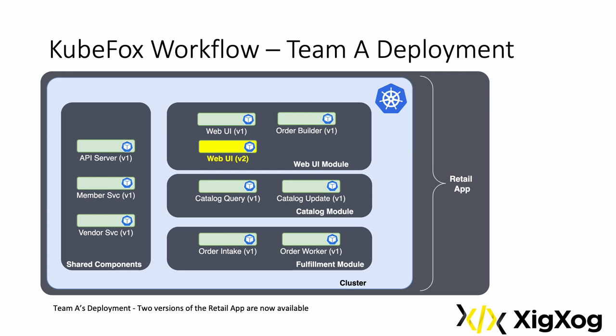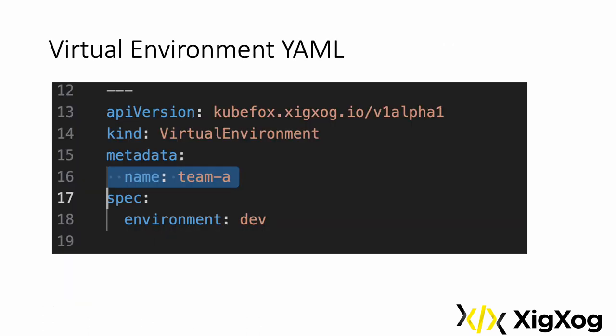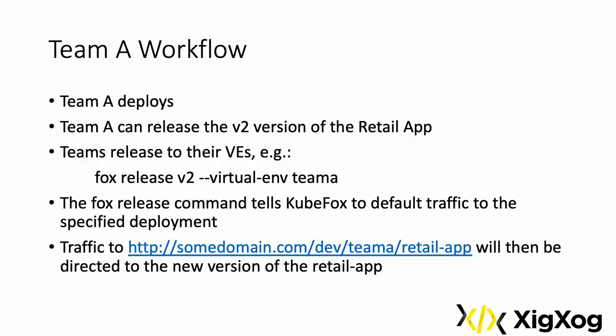Let's delve a bit deeper into KubeFox capabilities and how VEs help simplify engineering workflows. This is a sample of what the YAML looks like for the Team A VE — it's surprisingly simple, and you use kubectl apply to write it to the cluster. When Team A deploys, they deploy to the Team A VE. Traffic is routed to the Team A VE by subpath, so it's extremely simple for Team A to test their changes without being impacted by Team B and Team C colleagues. Teams deploy to a KubeFox VE that they define and control. Team A can optionally release the retail app. When an app is released to a VE, KubeFox defaults any traffic directed to that VE to the released version of the app.